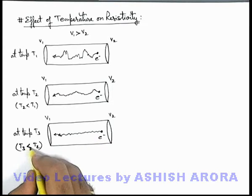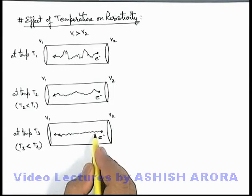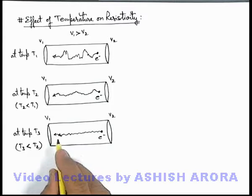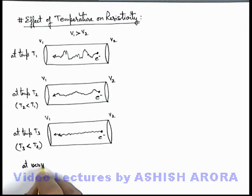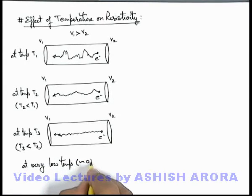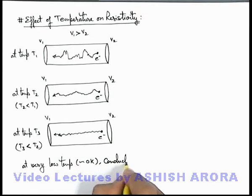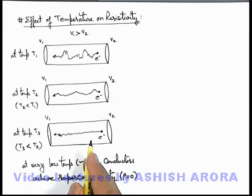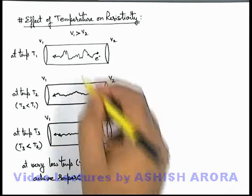As temperature approaches almost zero kelvin — a very low temperature — thermal agitation is reduced to such a low extent that electrons are not colliding with their neighbors. They will move perfectly in a straight line and the conductor can be considered to have transformed into a superconductor. At very low temperature of the order of zero kelvin, conductors achieve superconductivity — a state where the resistivity of the conductor becomes zero because there are no collisions acting on the electrons.